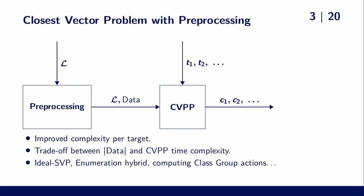Such a CVP algorithm with preprocessing has numerous use cases. Concrete examples are ideal SVP, enumeration hybrids for SVP, or even computing class group actions in a relation lattice.